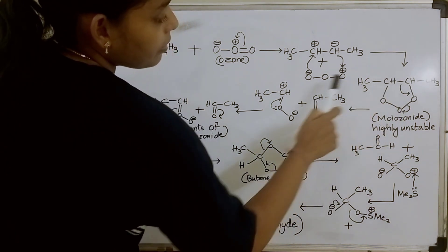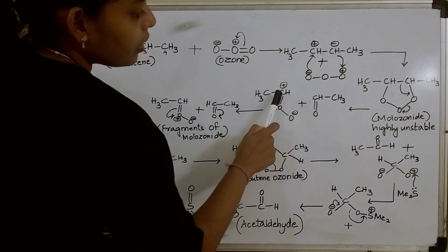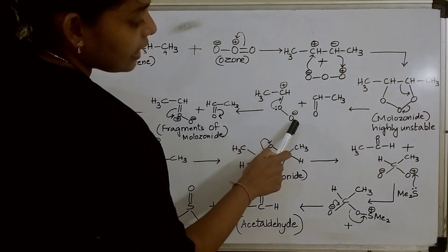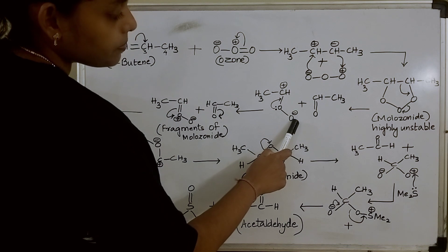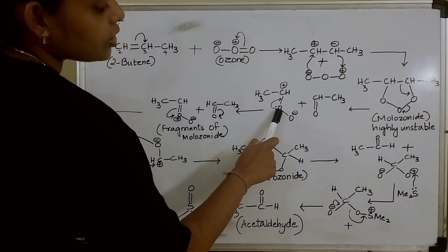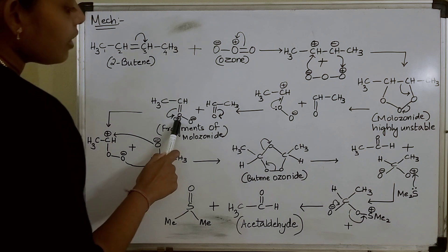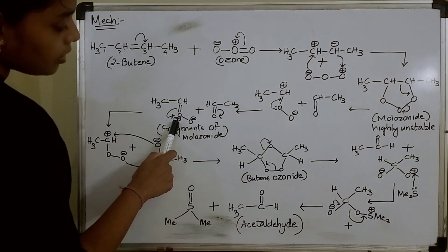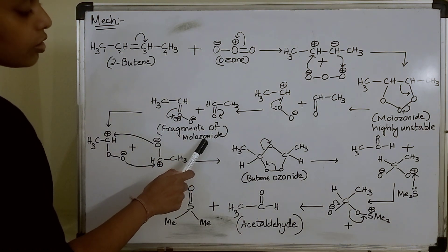And here this carbon will get a positive charge. Now this carbon is having a positive charge and this oxygen is having a negative charge. Here the lone pair of electrons present on the oxygen is shifted, giving oxygen a positive charge. So these are the fragments of molozonide.